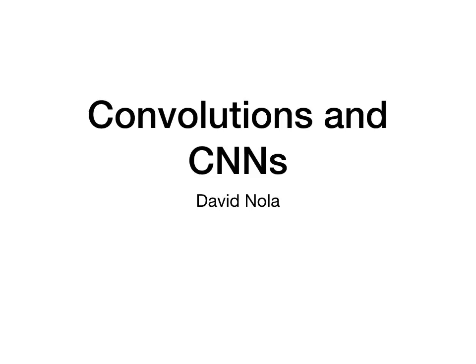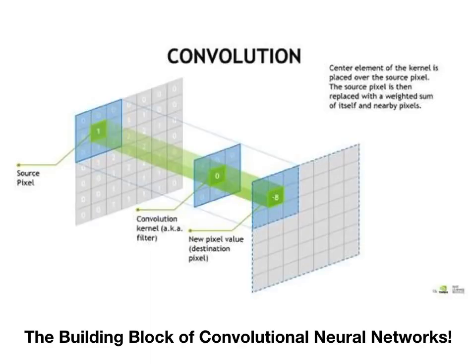Hi, I'm David Nola and I'm going to talk about convolutions and how we build on these to create convolutional neural networks. Starting off with our motivating example, what we want to explain is this fundamental building block, the convolution operation. What we can see here are our source pixels coming in from our source image. We have this convolutional kernel or filter that's applied to that source image, and the result of this operation is essentially a new output image, or activation map as we call it.